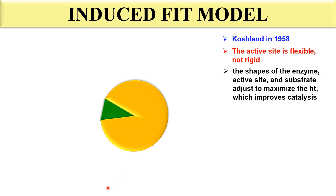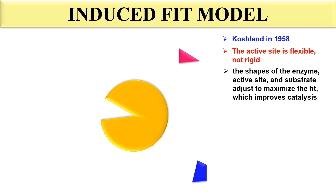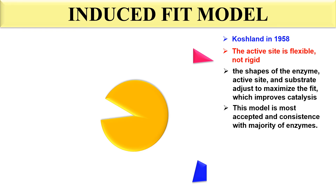Now as the substrate is properly fitted into the enzyme, the reaction proceeds and the substrate is converted into product — represented by the blue and magenta blocks. The product is then released from the active site and the enzyme is ready for the next reaction. The Induced Fit Model is the most accepted model because the active site is flexible, not rigid as the Lock and Key Model states, and this model works with the majority of enzymes.